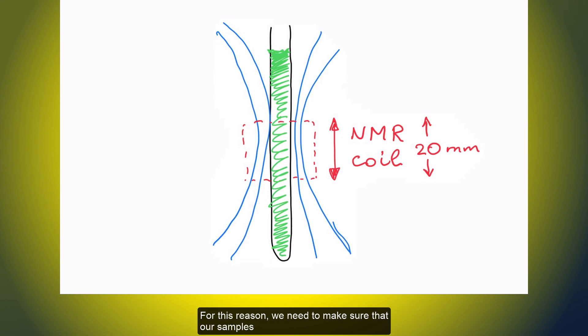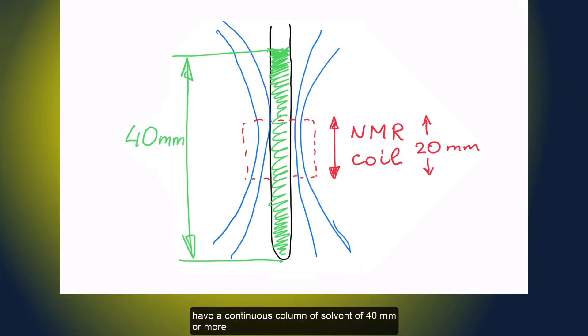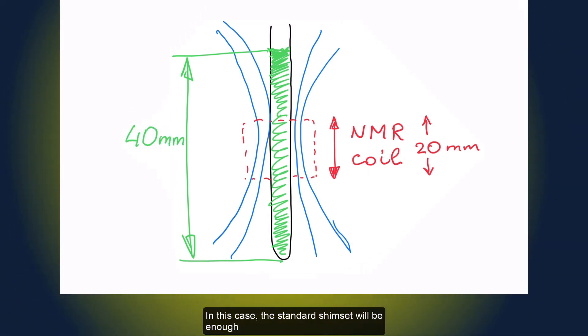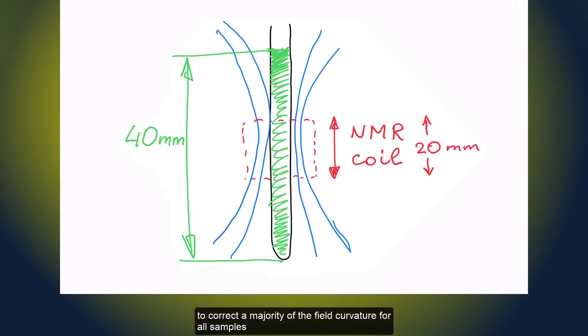For this reason, we need to make sure that our samples have a continuous column of solvent of 40 mm or more. In this case, the standard shim set will be enough to correct a majority of the field curvature for all samples.